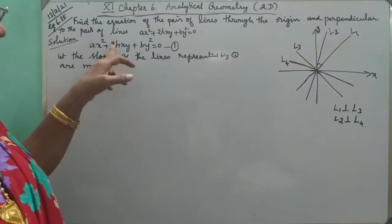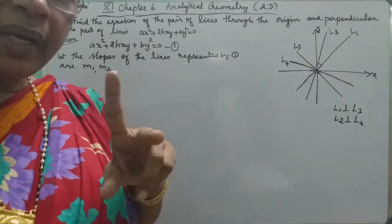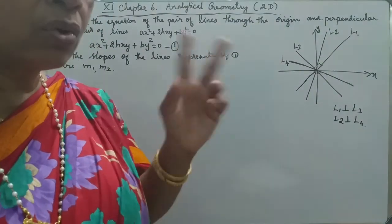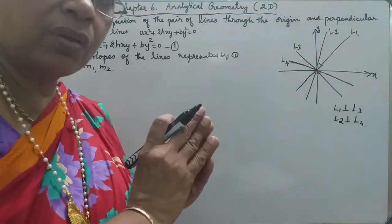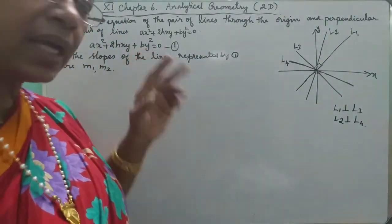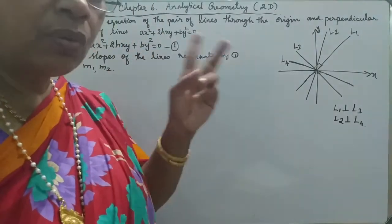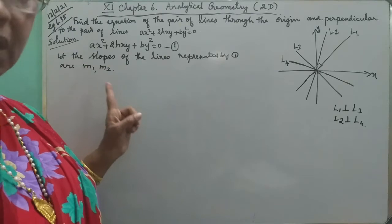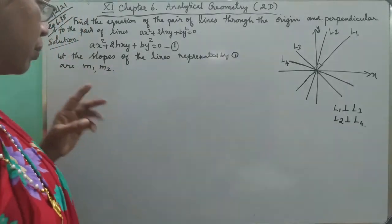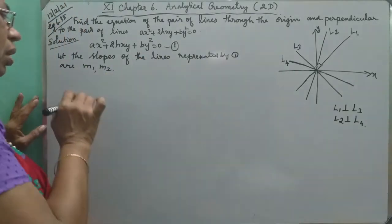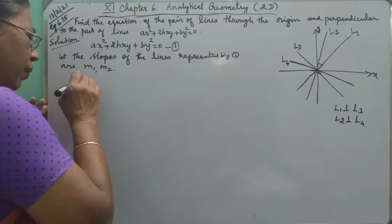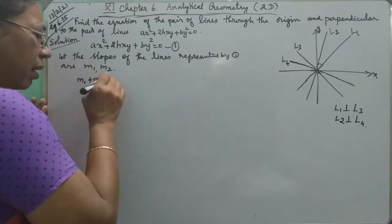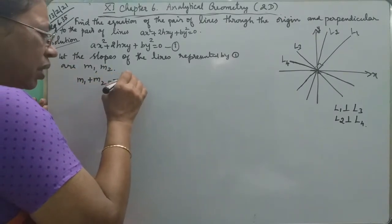This is the product of the two lines. The slope is M1 and M2. If we write M1 and M2, it is minus 2H by B.